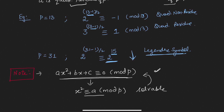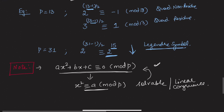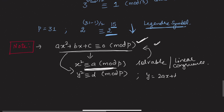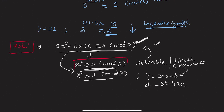Also note why we study quadratic residues: in the previous video we discussed solving general quadratic congruences. It suffices to solve congruences of the form y² ≡ d (mod p), where y = 2ax + b and d = b² - 4ac. If we can solve this using a linear congruence, we can determine whether the general quadratic congruence is solvable. That is why quadratic residues are important, and we will look at the Legendre symbol in the next video.